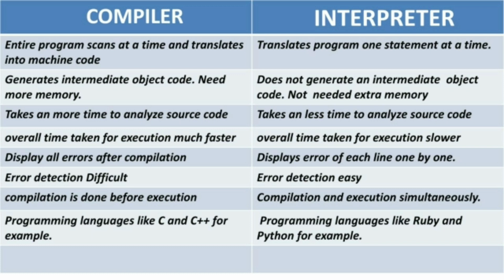Error detection is difficult for the compiler, whereas error detection is quite easy in the case of the interpreter. Compilation is done before execution — you have to remember that for the compiler, compilation is done before execution.